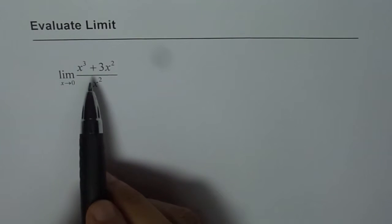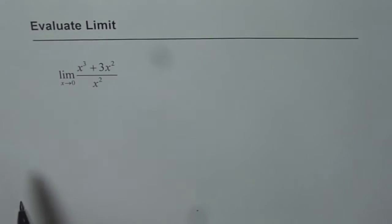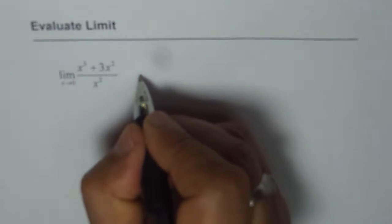Evaluate limit of x cubed plus 3x squared divided by x squared as x approaches 0. So let's first substitute 0 and see what happens.